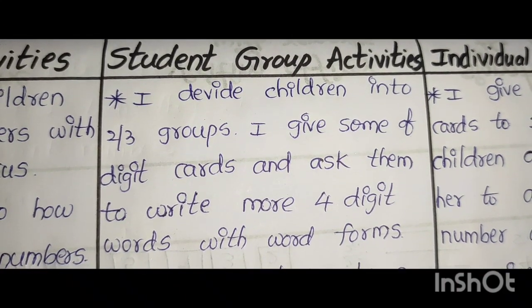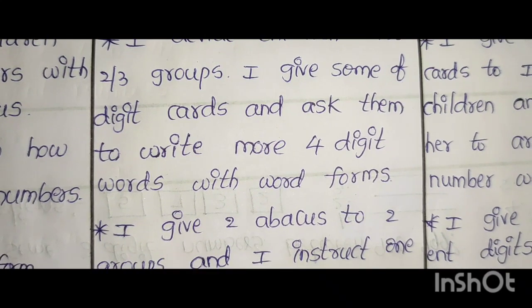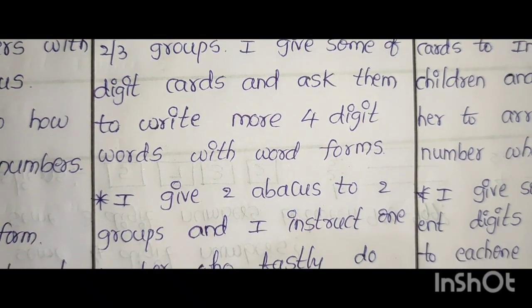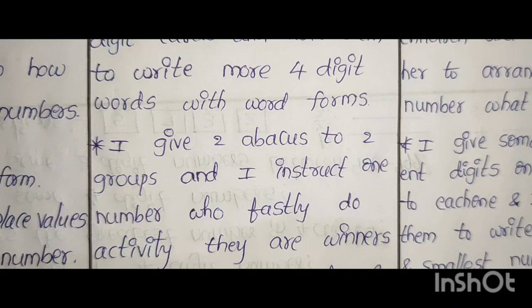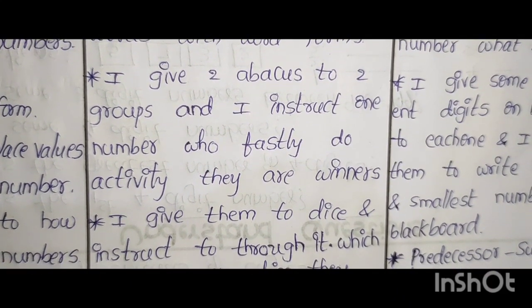Next group activities. I divide children into 2 or 3 groups. I give some digit cards and ask them to write more 4 digit words with word forms. I give 2 abacus to 2 groups and I instruct 1 number who firstly do activity. They are winners.